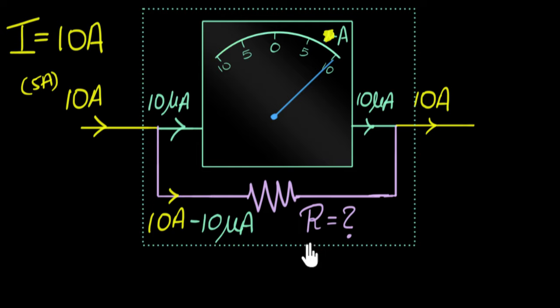And again, I want you to pause now and think about how would you find the value of the resistance? I'll give you some clue. Think about the galvanometer and this resistor. They are connected in parallel. So somehow can you use that property to try and build an equation? Go ahead, pause the video and give it a try.